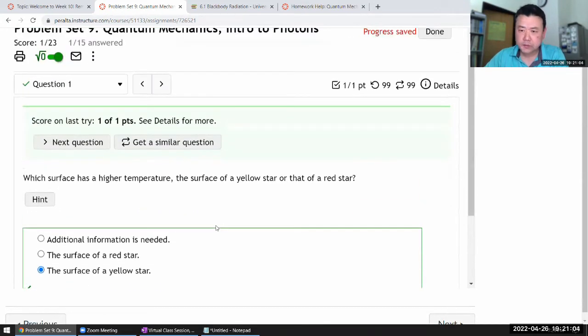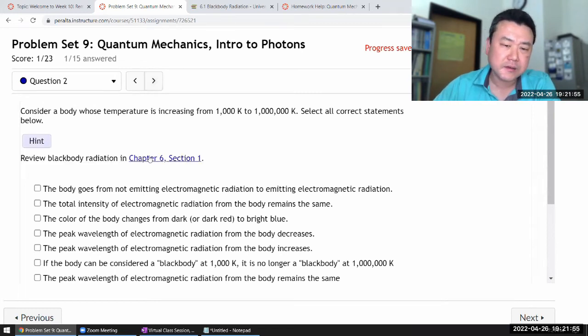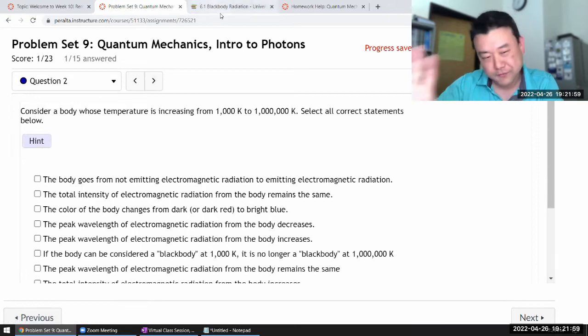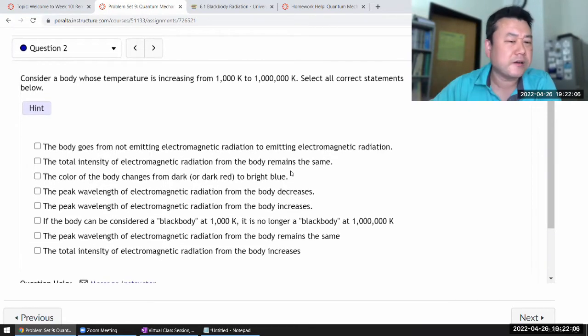OK, let's keep going. It says consider a body whose temperature is increasing from thousand Kelvin to a million Kelvin. OK, let's see here. So this is, again, black body radiation. You know, there's the section. Read it through it. Where you are not sure, compare your answer against it. Let me just go through the answer here.